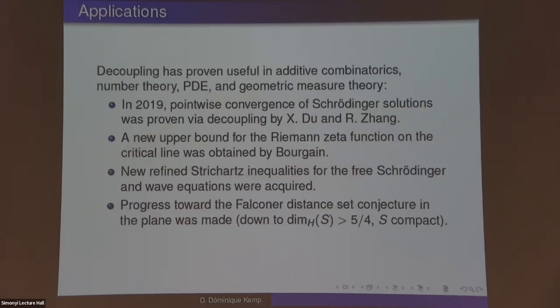Moving to applications - this list is far from complete, I just wanted to provide a few well-known canonical results. The pointwise convergence of Schrödinger solutions was an open problem for quite some time, and it was solved via decoupling by Du and Zhang. Bourgain provided a new upper bound for the Riemann zeta function on the critical line - a number theory application.